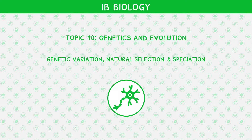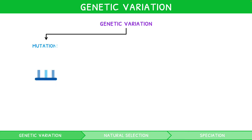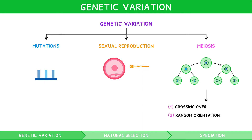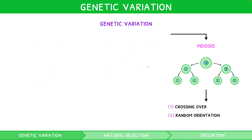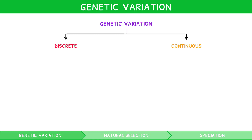As introduced in our IB Biology Topic 5 video series, genetic variation is introduced during mutations, sexual reproduction and meiosis through crossing over and random orientation. Such variation is often classified into two groups: discrete and continuous.